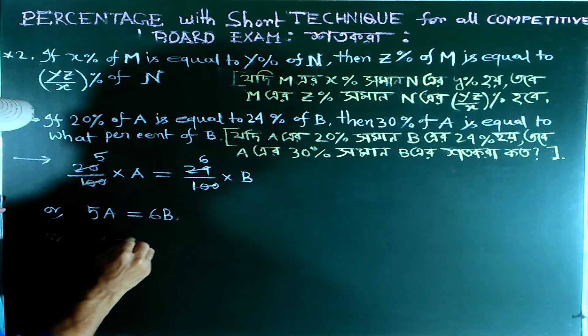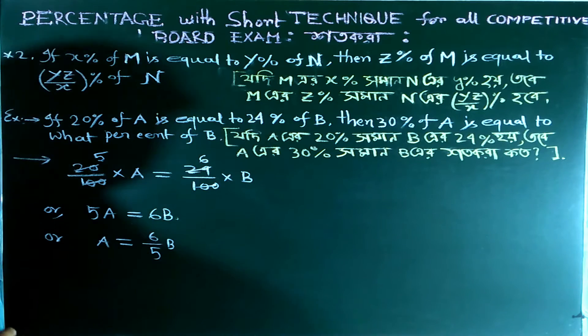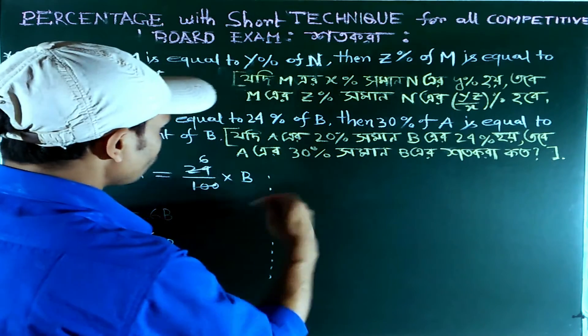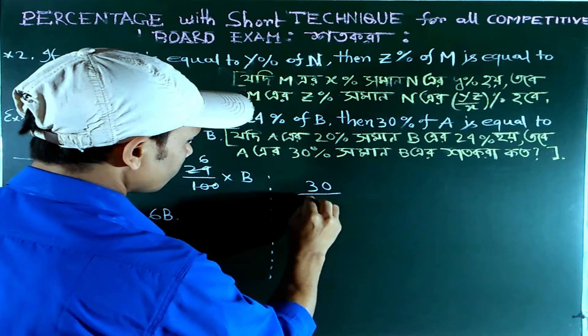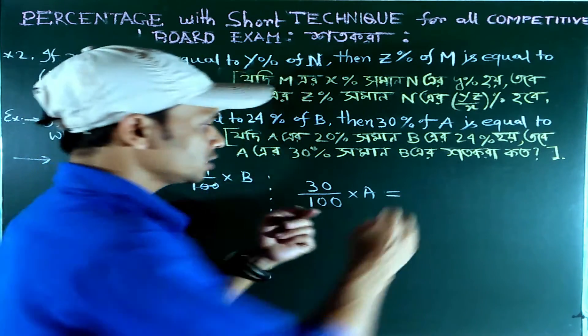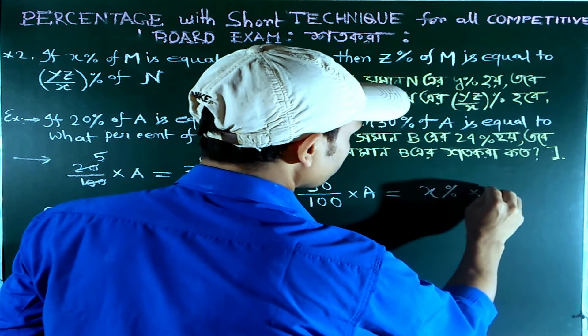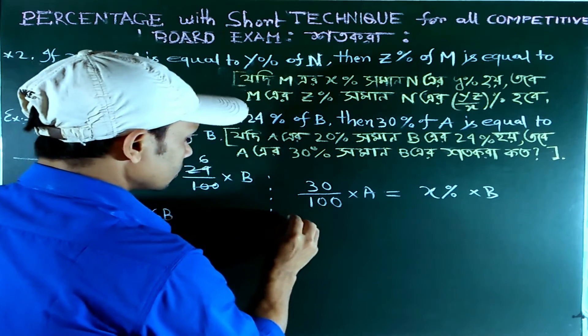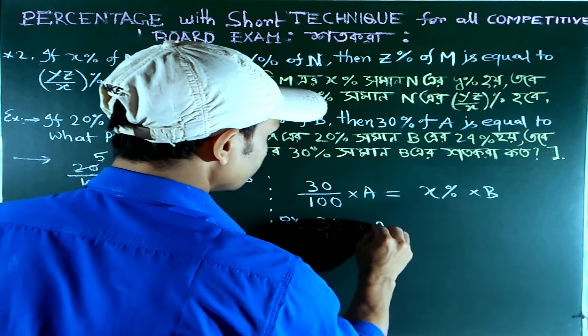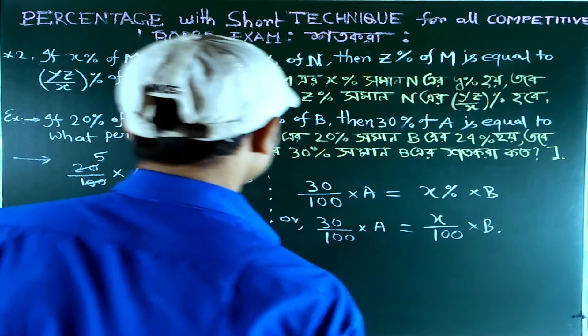Therefore A equals to 6 upon 5 multiplied by B. Now, 30 percent of A equals to what percent of B? So 30 upon 100 multiplied by A equals to X upon 100 multiplied by B.